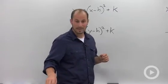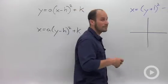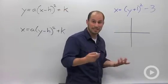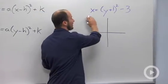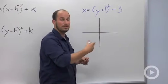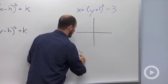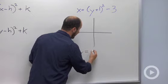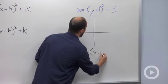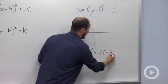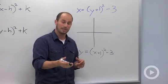So what we can do in order to graph it is think about what the relating equation is for y equals. So I have right here x equals y plus 1 squared minus 3. Think about the relating graph, y equals x plus 1 squared minus 3, and think about what each component does.